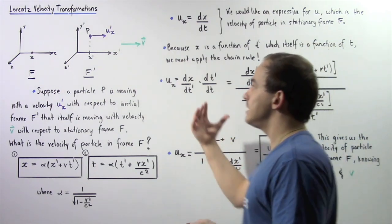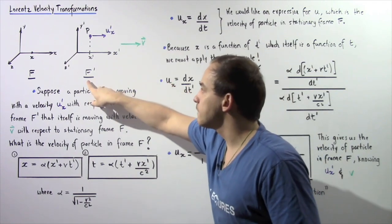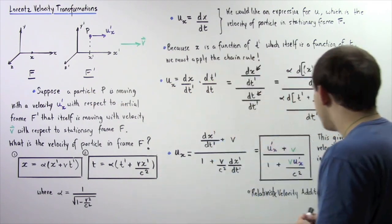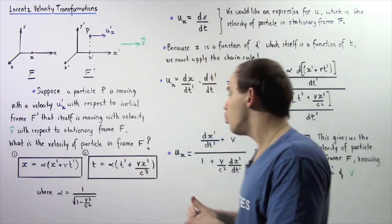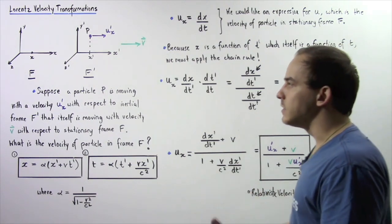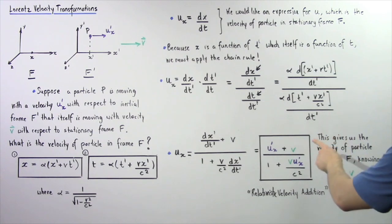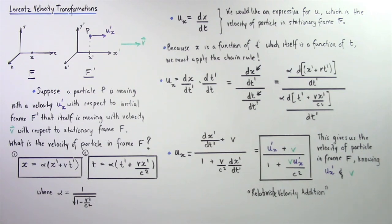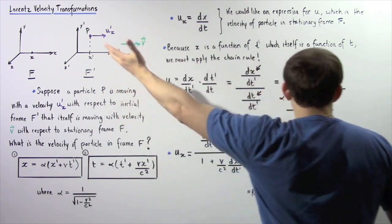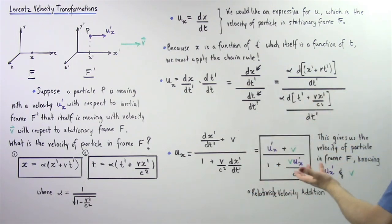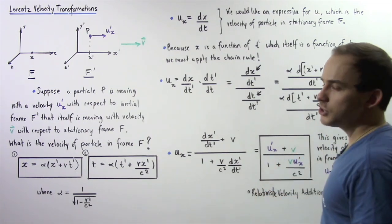Here, v is the velocity of the spaceship — the velocity of frame F' — which we are given. And u'x is the velocity of the missile, our particle, also given. And c is the speed of light in a vacuum. This equation gives us the velocity of our particle in frame F with respect to the stationary Earth, knowing the velocity of the particle with respect to F' and the velocity of the frame. This equation is known as the Lorentz velocity transformation, or relativistic velocity addition equation.